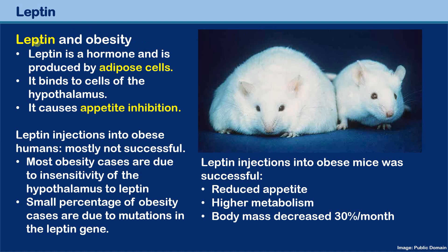The hormone leptin has some connection with obesity. Looking at the mouse on the left side, it is a little bit overweight compared to the normal mouse on the right side, because this mouse could not control its eating behavior and continued eating until it grew overweight.